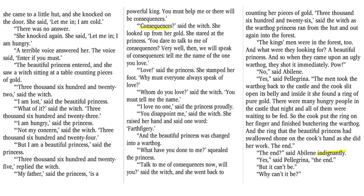'The beautiful princess entered and she saw a witch sitting at a table counting pieces of gold. Three thousand six hundred and twenty-two,' said the witch. 'I am lost,' said the beautiful princess. 'What of it?' said the witch. 'Three thousand six hundred and twenty-three. I am hungry,' said the princess. 'Not my concern,' said the witch. 'Three thousand six hundred and twenty-four. But I am a beautiful princess,' said the princess. 'Three thousand six hundred and twenty-five,' replied the witch. 'My father is a powerful king. Must help me, or there will be consequences.'